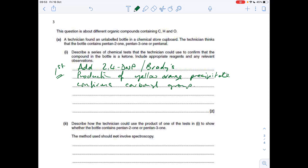And the production of the yellow-orange precipitate confirms the fact that it's a carbonyl. So it's definitely one of those three. Second thing you would do is to confirm it's a ketone, you would add Tollins reagent. And if it was a ketone, it won't give a silver mirror. So no silver mirror confirms ketone.